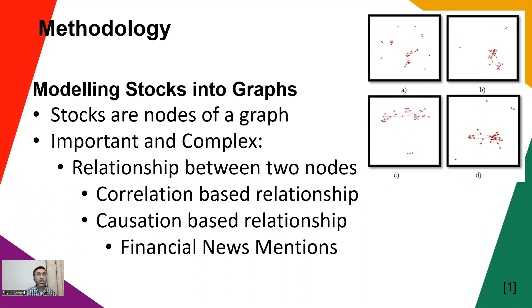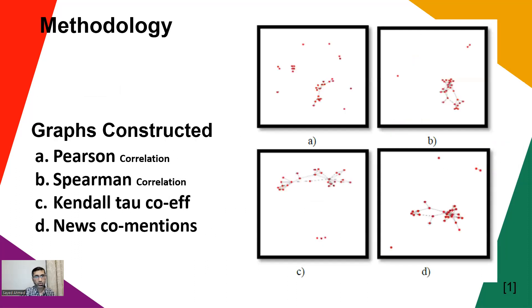We create two types of graphs: one is correlation - how they are correlated - and another is relation in the financial news articles, whether they have been mentioned in the same article or not. That is considered to be a relation, the causation-based relationship. They create different graphs, so you can say that there are four different graphs.